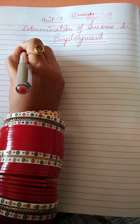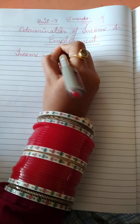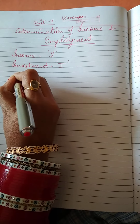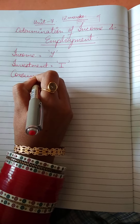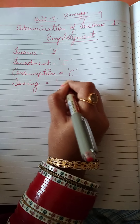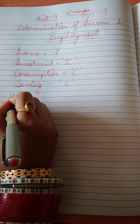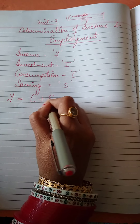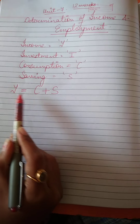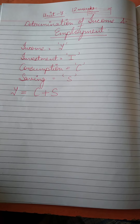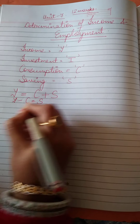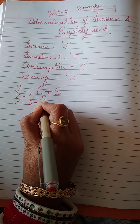In this unit, income is denoted as Y, investment as I, consumption as C, and saving as S. A part of income is consumed and a part is saved. So Y is equal to C plus S, which also means Y minus C equals S, and Y minus S equals C.